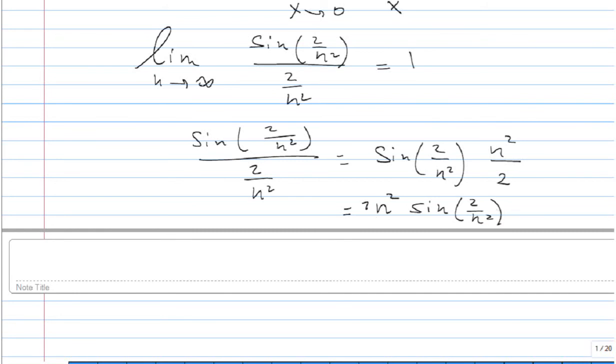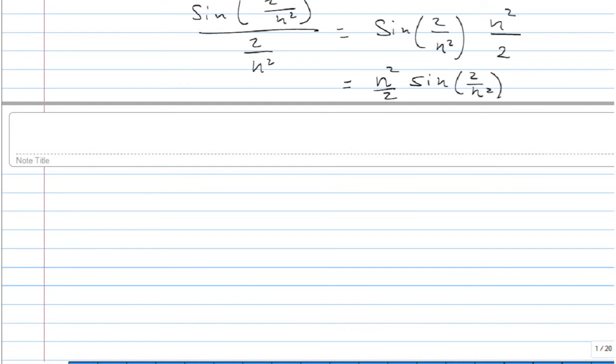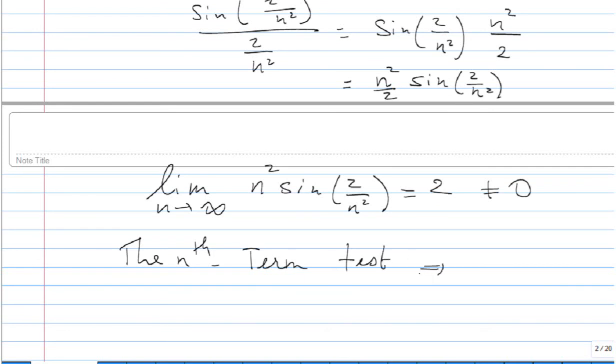Clearly, this means that lim(n² sin(2/n²)) = 2 as n→∞. Since the limit of the terms we are adding is not equal to 0, the nth term test tells us that the series Σ n² sin(2/n²) diverges.